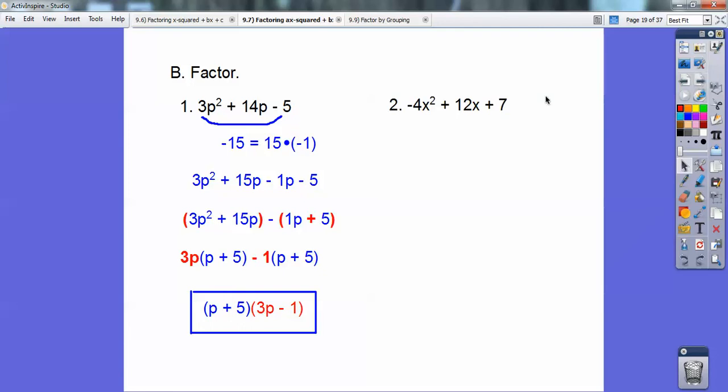Whenever your quadratic term is negative, we're going to first pull out the negative. The quadratic term is your x² term. And then I'm going to go ahead and multiply 4 times negative 7 is negative 28.